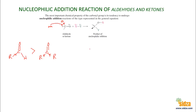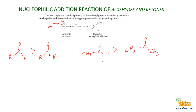For example, acetaldehyde (CH3CHO) is more reactive than acetone, which has two methyl groups attached to the carbonyl. If you attach more or higher alkyl groups to the carbonyl group, it will further decrease reactivity.